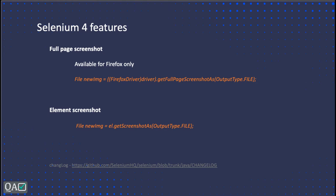For Firefox driver there is a method called getFullPageScreenshotAs(), which accepts an OutputType like File. This method is only available for Firefox driver, so you need to cast your driver accordingly. For taking an element screenshot, you first identify the element and then call element.getScreenshotAs(). This is similar to how element.click() and element.sendKeys() work — they simply added another method getScreenshotAs().